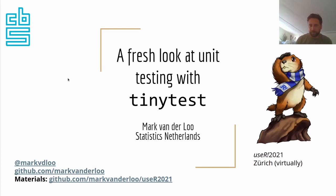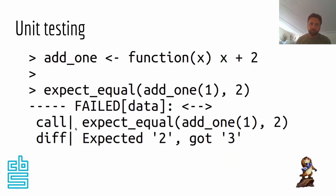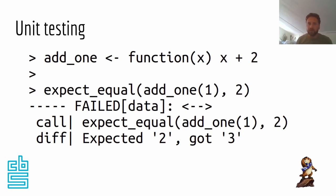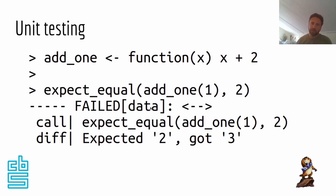In unit testing, you measure the quality of your source code by comparing the actual output of function calls with the output that you expect. Here's an example: there's a function called add1 that actually adds two. I use a function from the TinyTest package called expect_equal, and compare the output of add1(1) with the expected output two. The output doesn't match, so I get a message saying this test failed — some data is inconsistent — along with the test call, what I expected, and what I got.